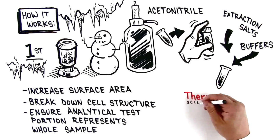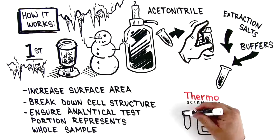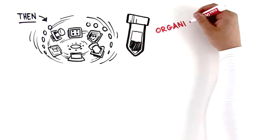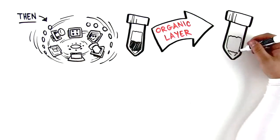For this step, you can use ThermoScientific prepackaged salts and centrifuge tubes. Then, centrifuge the tube to separate the organic layer, and transfer the organic layer to another centrifuge tube for the next step.